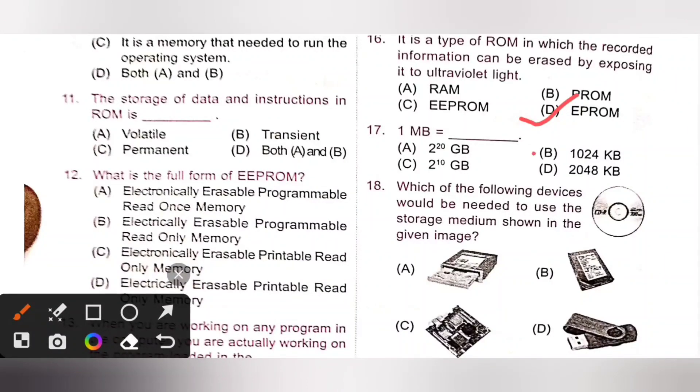17th. 1MB is equal to? So 1MB is 1024 kilobytes. Option B is the correct answer.